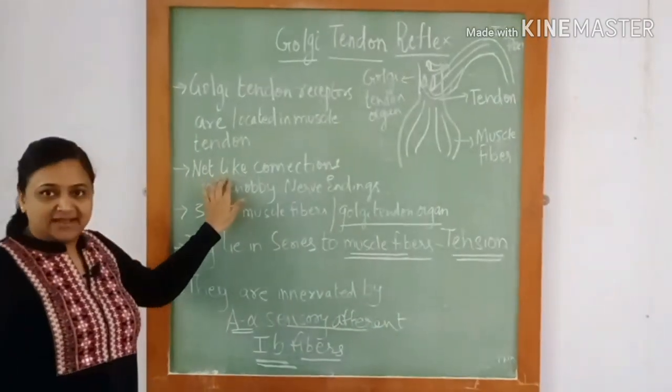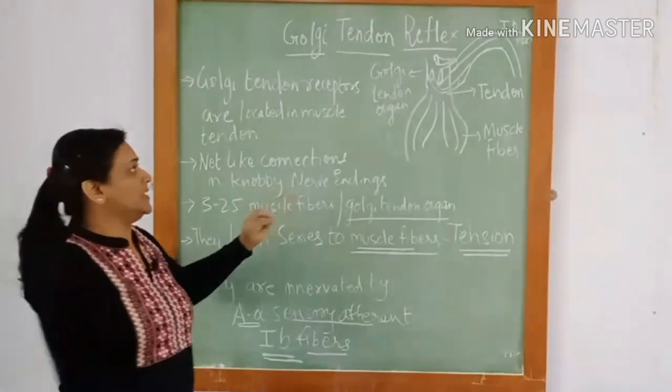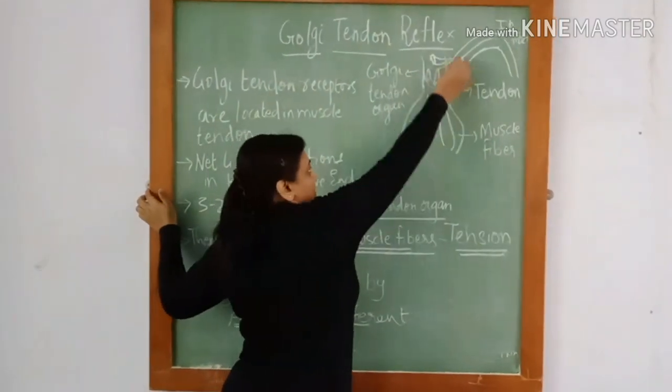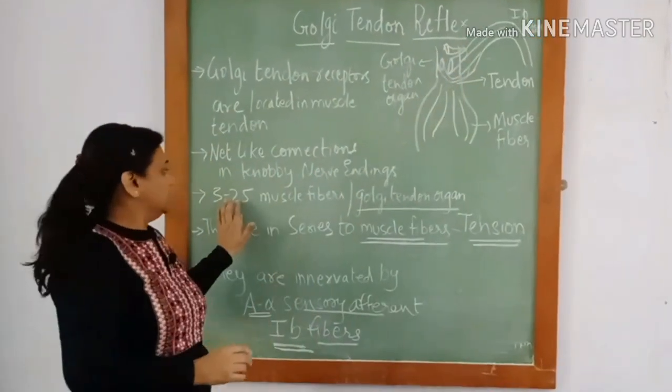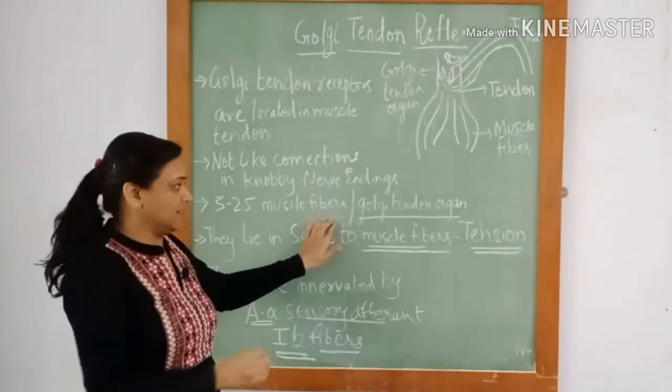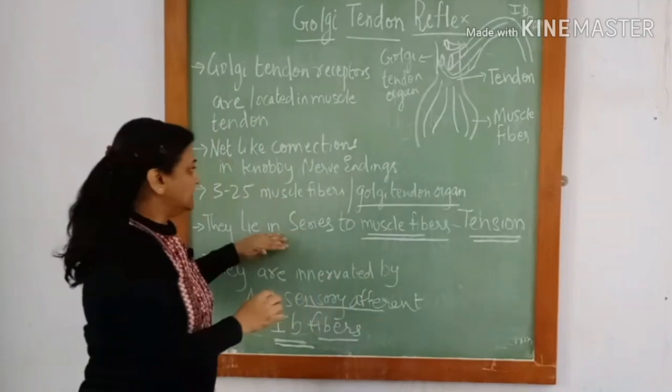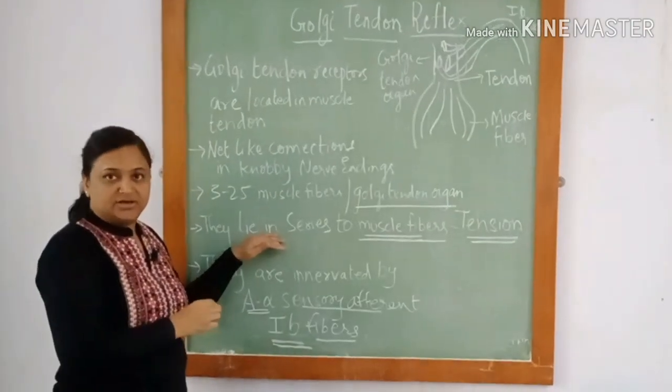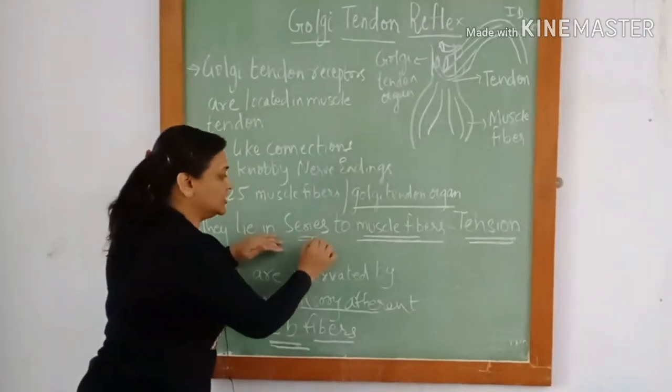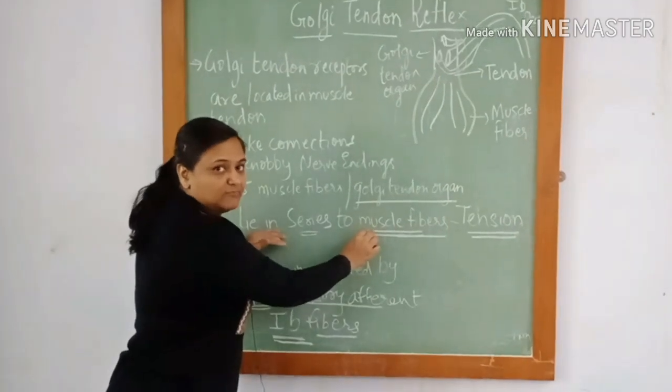They are knob-like connections with nerve endings. There are 3 to 25 muscle fibers for each Golgi tendon organ. This Golgi tendon organ lies in series to the extrafusal muscle fibers.